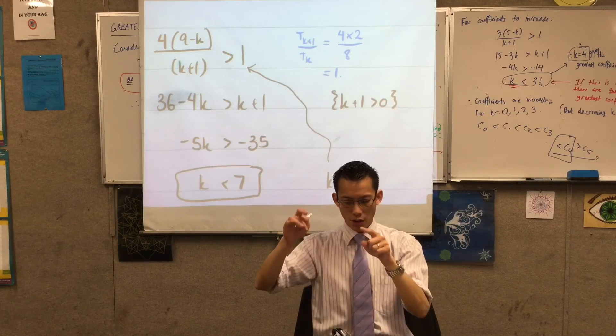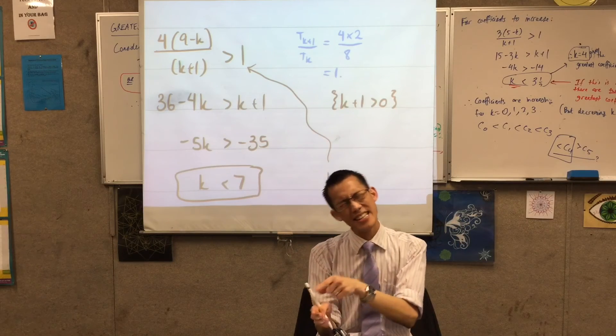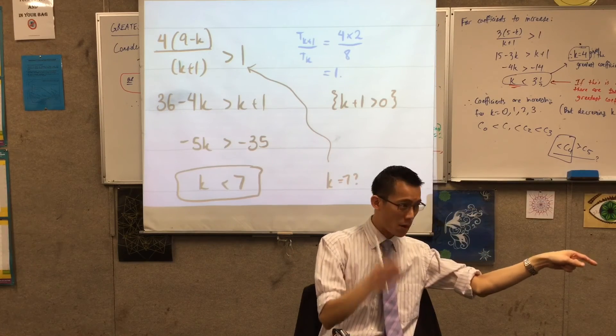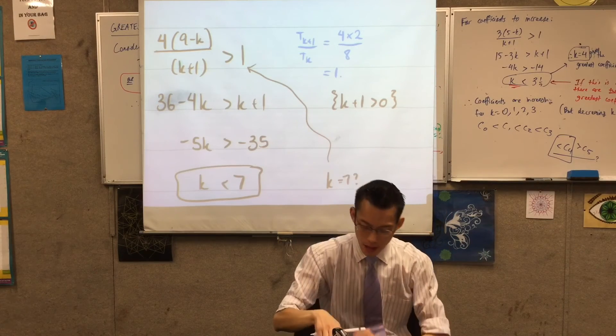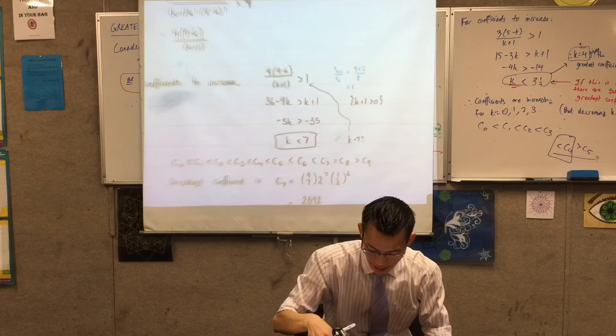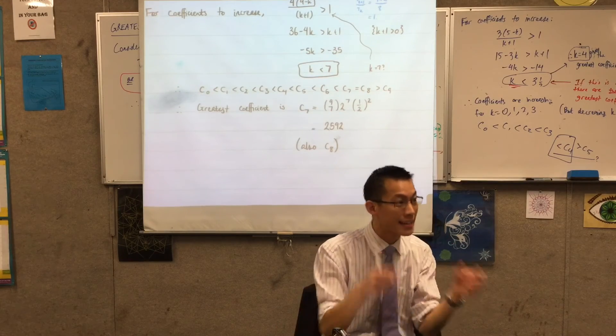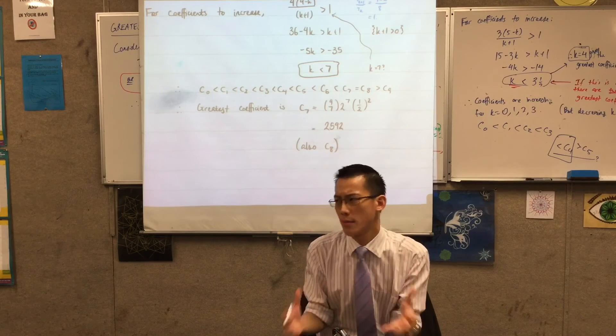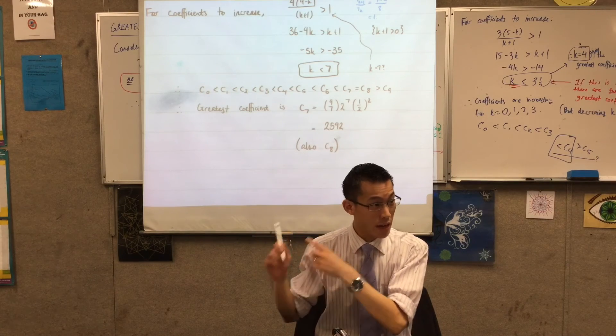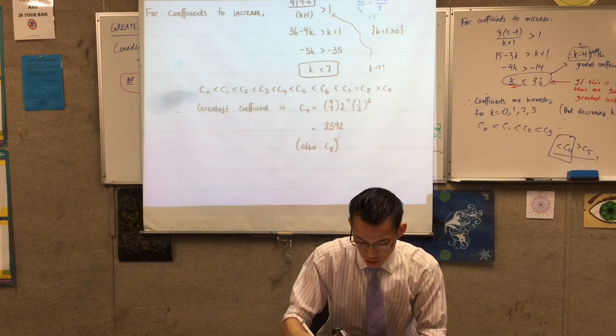Which means that once k equals seven, to get to k equals eight I multiply by one, which makes those coefficients identical. So that's why now the next line you can see, yeah c seven to get to c eight they're the same thing. So this is actually really nice even though it's like oh I have to write so many terms, but this is very meaningful. It shows I understand okay there's actually not just one. There are two greatest coefficients.